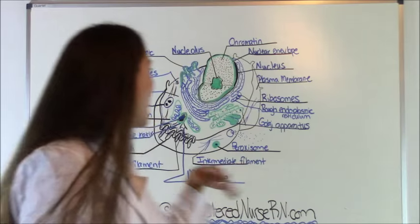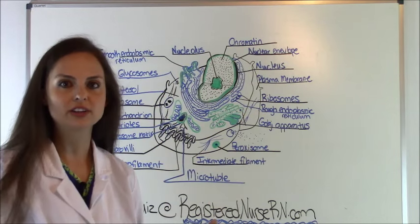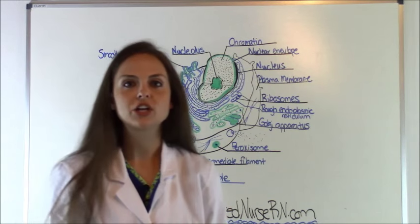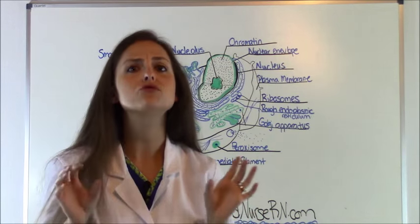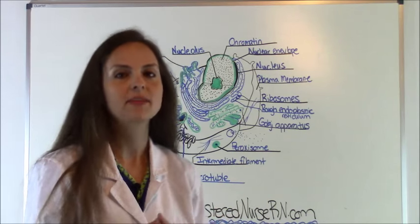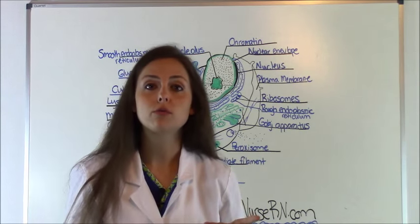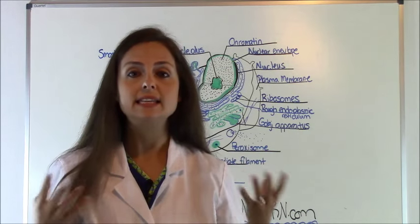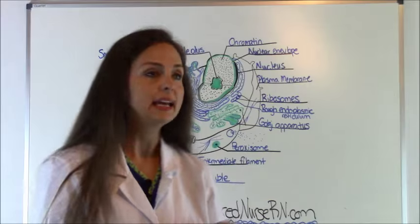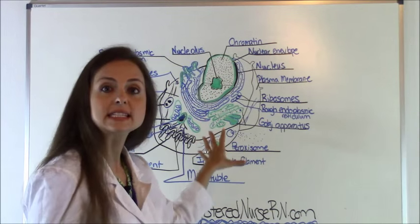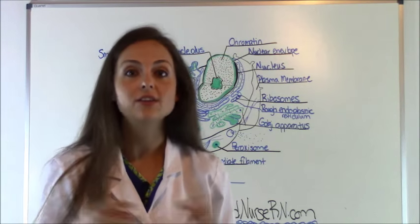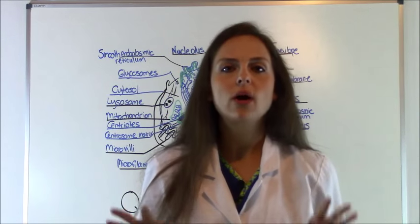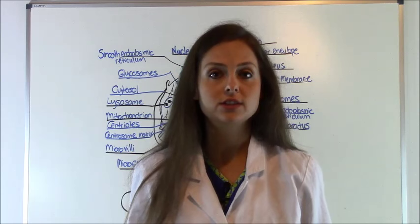Behind me, I have what a typical cell looks like. This cell is what's normally in the human body. Your body is made up of 50 to 100 trillion of these little things. Your cells are responsible for destroying invaders, replicating themselves, maintaining integrity and shape. And each of these little subunits in this cell are called organelles and they're responsible for doing this.